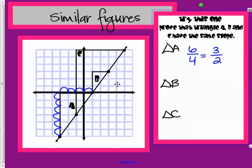Let's look at triangle B. Triangle B went up three and over two. Again, these are similar because three halves and three halves.